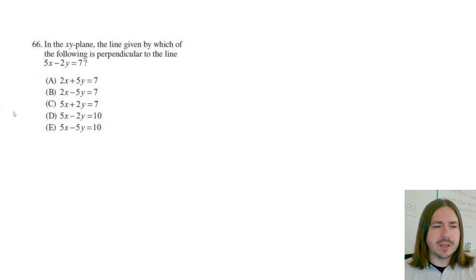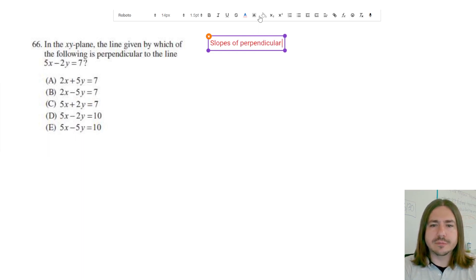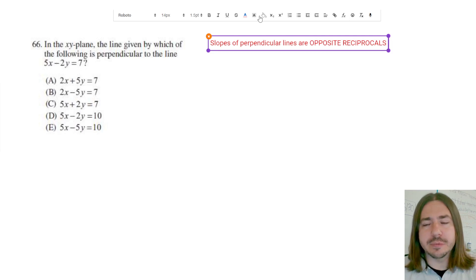So in order to tell whether or not two lines are perpendicular, what you need to do is find the slopes of the lines. The slopes of perpendicular lines are opposite, meaning one's positive and one's negative, reciprocals, meaning the fraction is flipped.